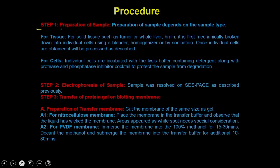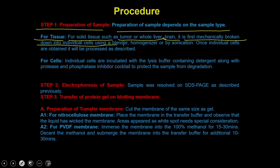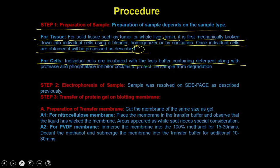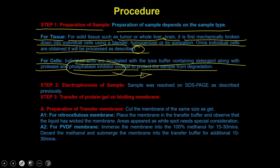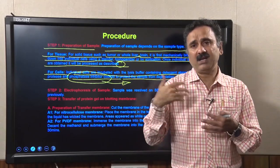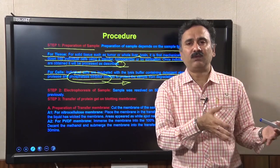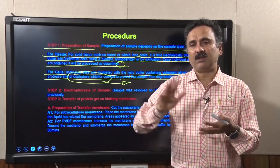Step 1: prepare the samples. For solid tissue such as tumor, whole liver, or brain, first mechanically break it down using a blender, then homogenize by sonication. For individual cells, incubate with lysis buffer containing detergent along with a protease inhibitor cocktail and, if probing phosphorylated antigens, a phosphatase inhibitor cocktail to prevent removal of phosphate groups from phosphorylated proteins.